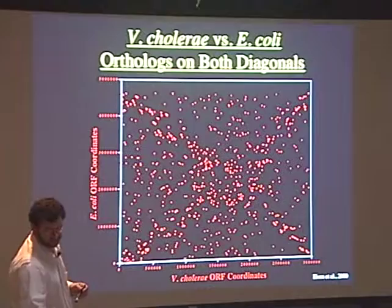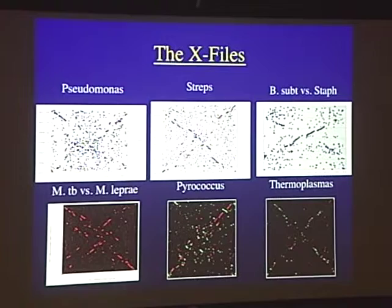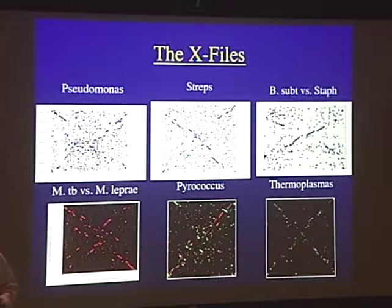Here's the amazing thing: basically every pair of closely related prokaryotic genomes — bacteria and archaea — show this pattern. This is not limited to E. coli or a subset of prokaryotes; it's everything: archaea, low GC gram positives, high GC gram positives, other types of proteobacteria. Everywhere we look. So this is some universal property of the evolution of prokaryotic genomes: this symmetrical inversion around the origin of replication.